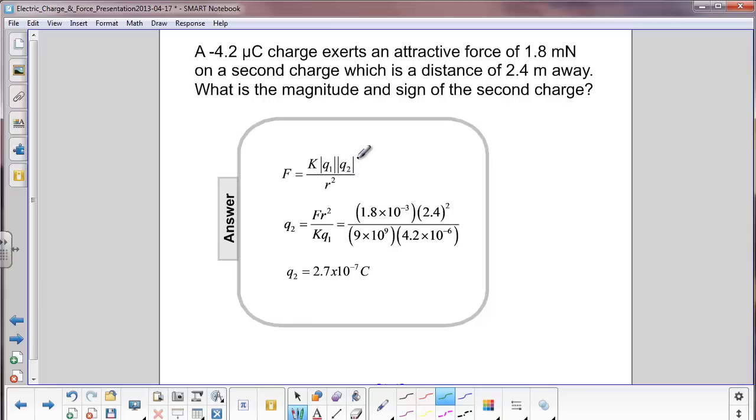We would like to find this quantity, q2. So before we put numbers in, we solve this algebraically for q2. We multiply both sides by r squared, and then divide by k times q1. So we have this expression for q2.